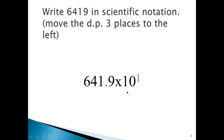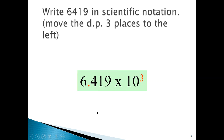However, this is not the scientific notation representation because we need to get the decimal point to the right of 6. If we move it another place, the exponent becomes 2, and when we get it right next to the 6, the exponent becomes 3. Therefore, the original number expressed in scientific notation is 6.419 times 10 to the 3. The 6.419 is the coefficient, and 3 is the exponent.